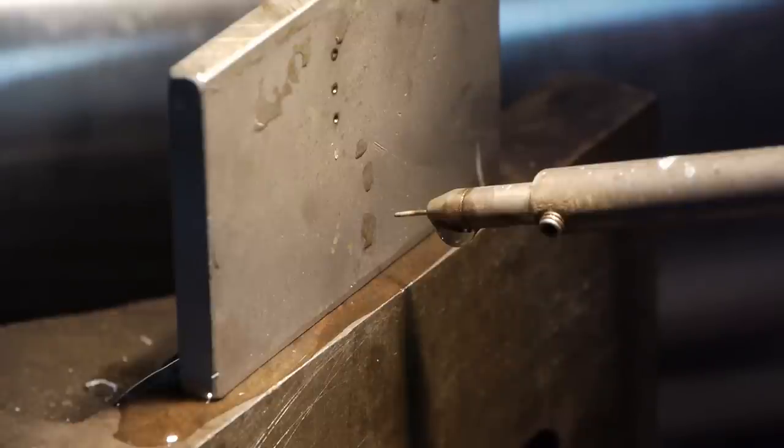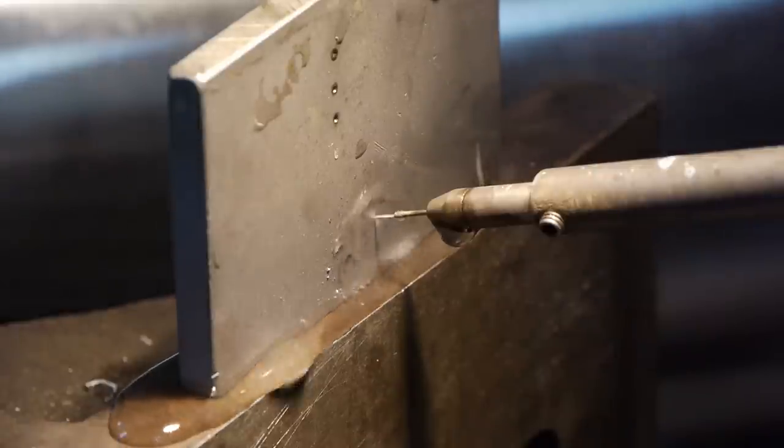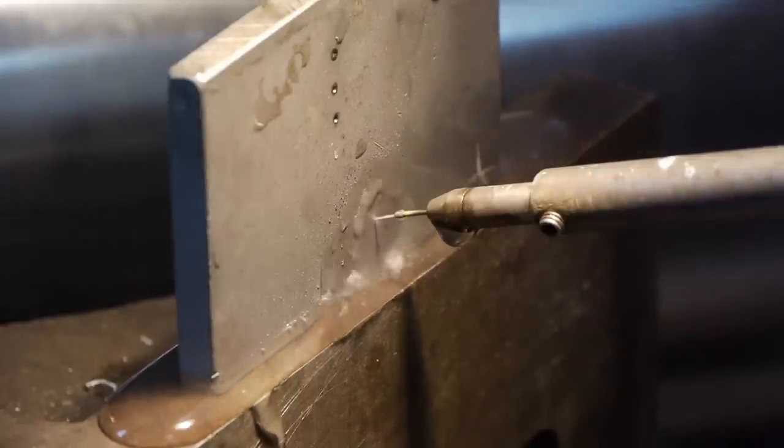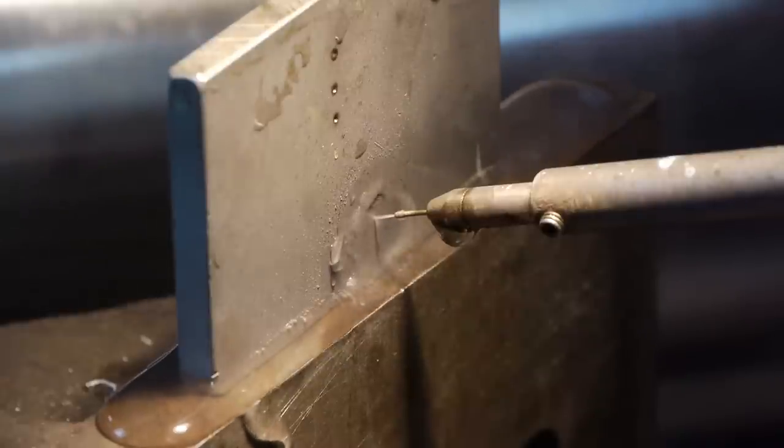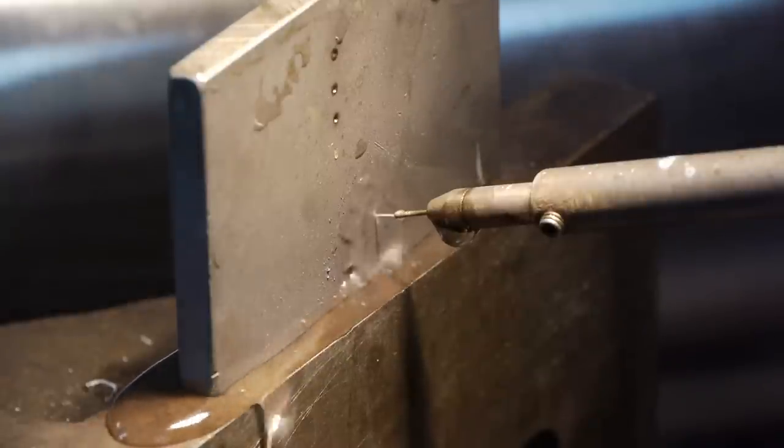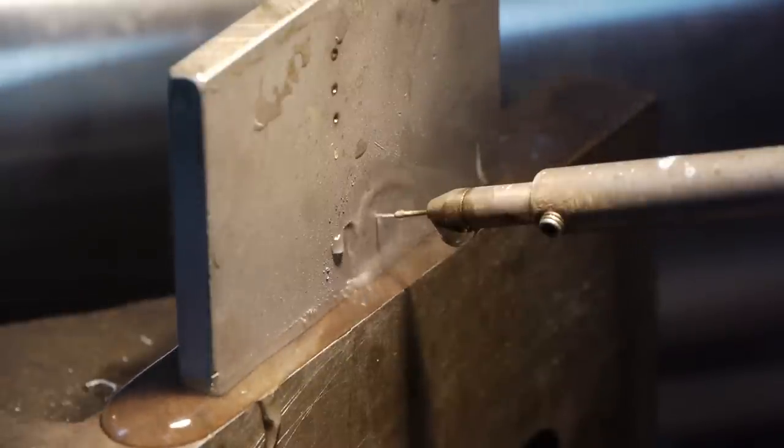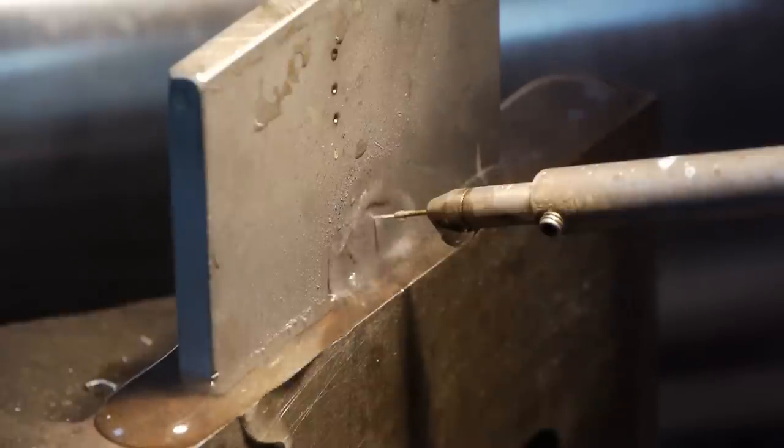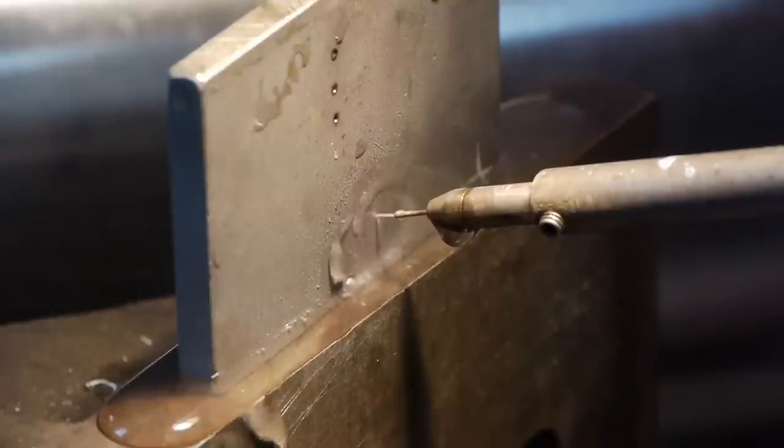The rotating electrode you see is a previously used electrode. Now the dielectric fluid is turned on. Since the electrode is used, the water coming out isn't perfectly straight. But once inside the hole, it really doesn't matter if the water coming out is straight or a little wobbly.